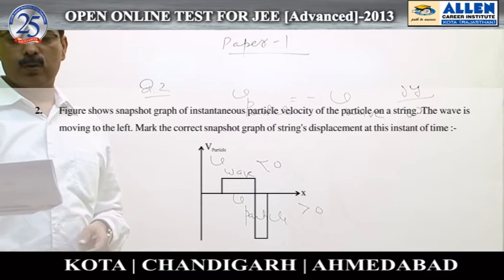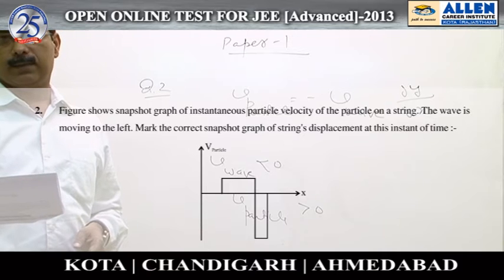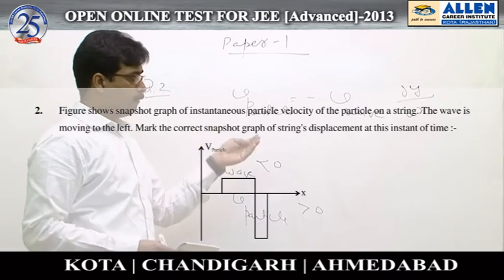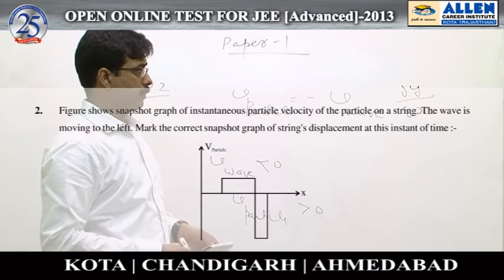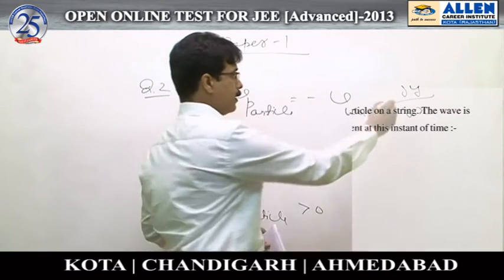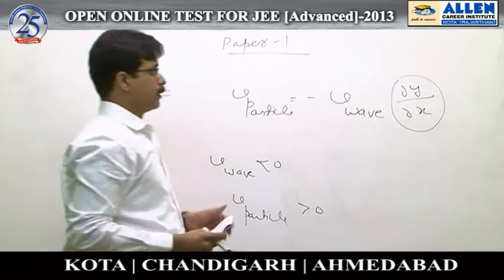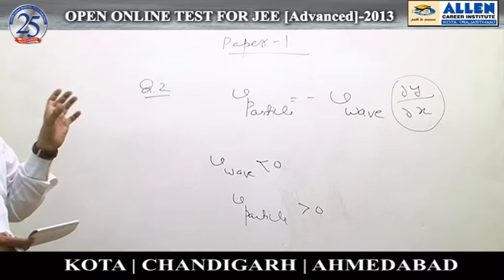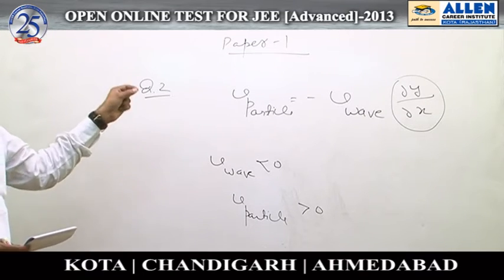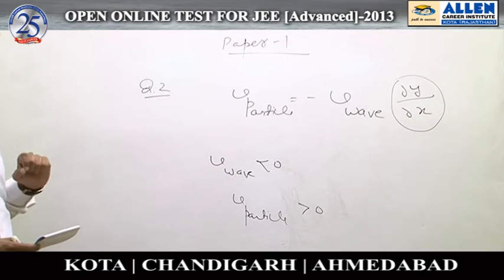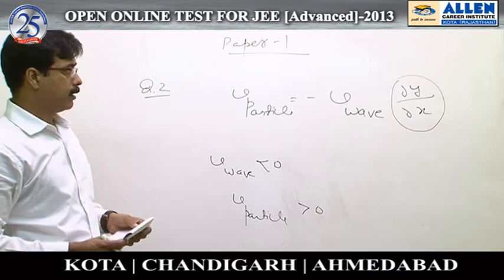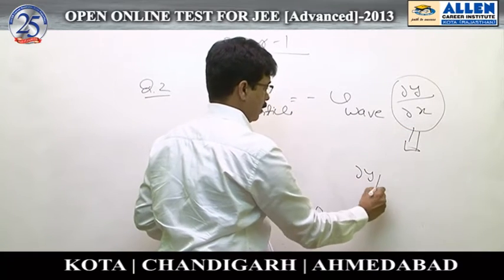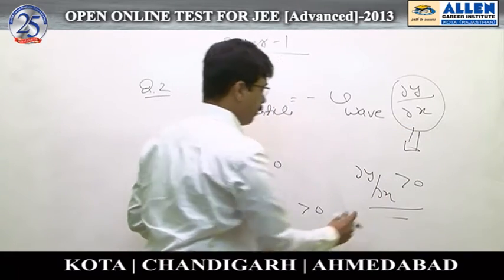Question number two. The graph shows velocity of a particle versus x. In fact, the velocity of a particle and the wave velocity are related by the relationship where ∂y/∂x represents the slope. According to the question, during the first part the particle velocity has been shown as positive, which means the slope of the graph in the first part should come out to be positive.